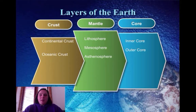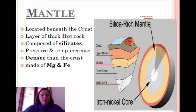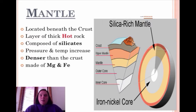Here are all ten layers that I'm going to show you. We just finished the two for the crust, and now here is the mantle. The mantle is located beneath the crust — it's a very thick layer of very hot rock. It's composed of silicates, which means silicon and oxygen. Temperature and pressure increase with depth, it's denser than the crust, and it's also made of magnesium and iron.